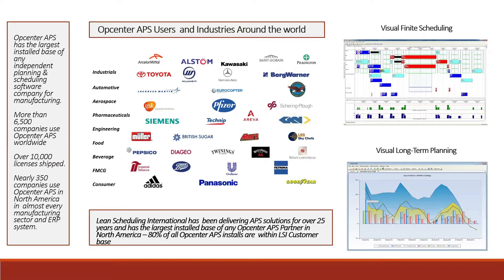That brings us to OpCenter APS. OpCenter APS has been around a long time and is the largest independent planning and scheduling software product out there in the market. Lots of people around the world have bought and implemented it, and in North America there are quite a few as well. You can see these logos representing industries — OpCenter is used by some pretty big, well-known companies across many different industries, which is a testament to the flexibility of the product. It can be configured to meet the specific needs of all these different industries without ever touching the core code.